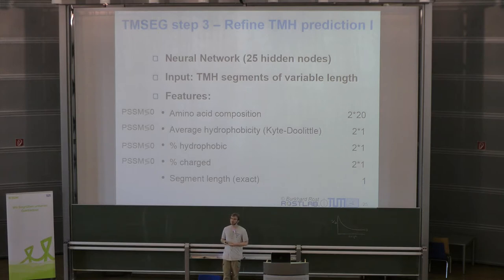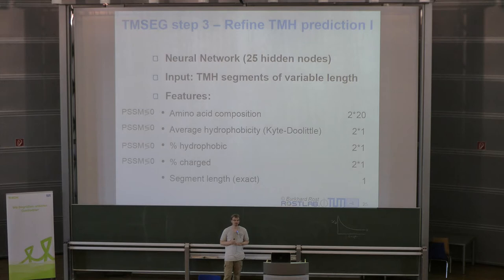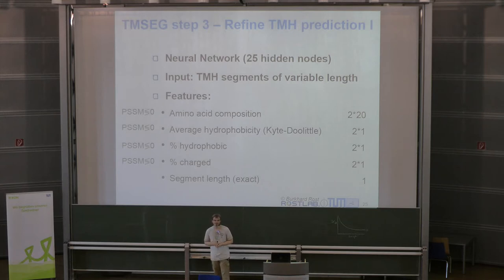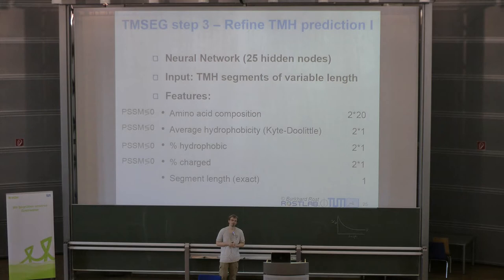During optimization a neural network performed better than a random forest for this step. I used 25 hidden nodes. The neural network output is binary: is a given segment a transmembrane helix or not? I look at all transmembrane segments from the first two steps and try to adjust them — shifting endpoints left or right, making them slightly longer or shorter — deviating endpoints by at most three residues.